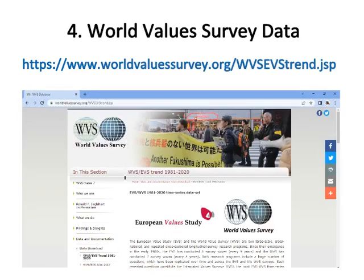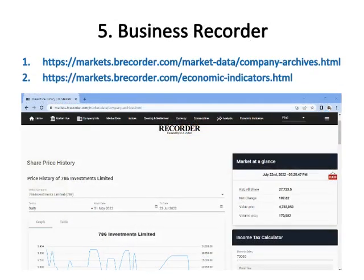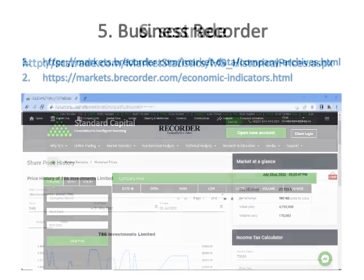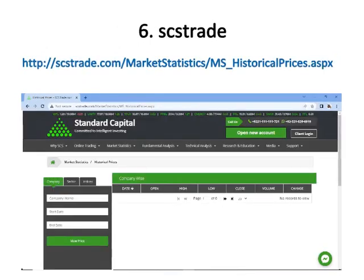Number four is World Value Survey data. You can download your required country data in SPSS, Stata, or other file formats. Number five is Business Recorder, where you can get all share price data of all listed companies of Pakistan. Number six is SCS Trade, for financial indicators of companies regarding Pakistan.